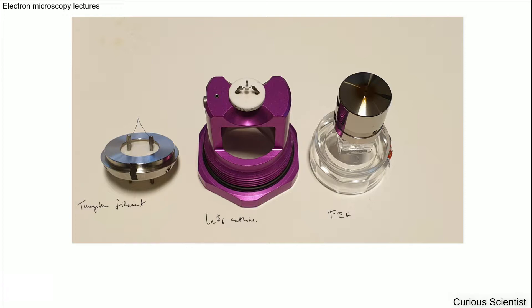You can see that it's more difficult to see the tip as compared to the tip of this filament. On the right hand side, under this cap, we have the field emission gun. There is a hole in the middle, and in the very middle of that hole you can see a very small tip. All the other things are under this so-called suppressor cap. I put these three sources next to each other so you can see how they differ in size and appearance.